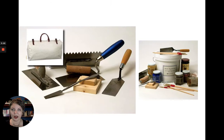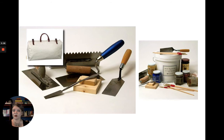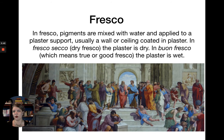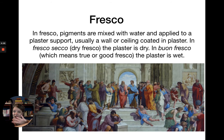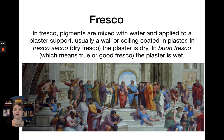Next we're going to talk about fresco, which might sound familiar especially if you've taken art history. In fresco, pigments are mixed with water and they're applied to a plaster support — usually a wall or a ceiling coated in plaster. Plaster is probably most familiar to people from medical casts: that white powdery stuff mixed with water that makes bandages hard. It's still used in construction and in the medical industry, and it's also an important ingredient in fresco painting.